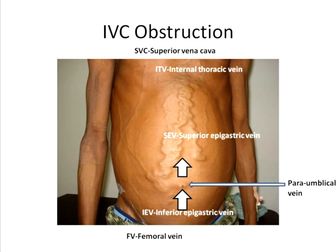It bypasses the usual flow, taking the abdominal wall route and draining into the superior vena cava, therefore producing this kind of flow pattern.